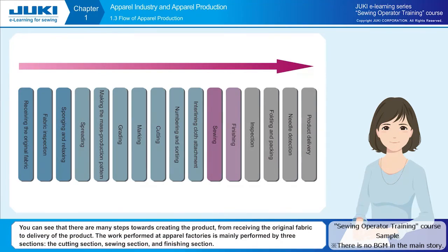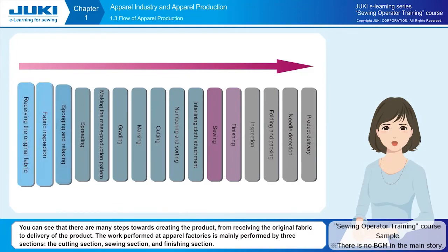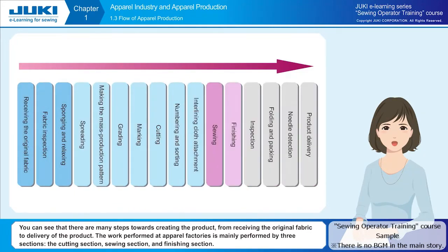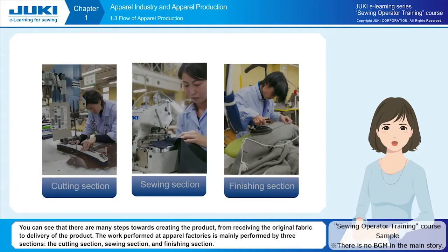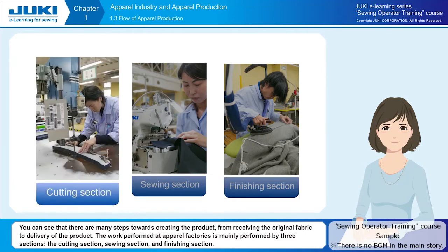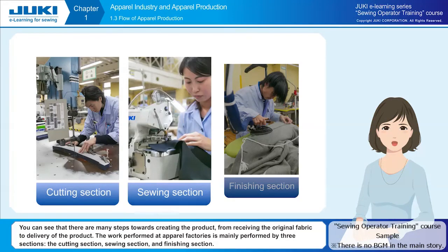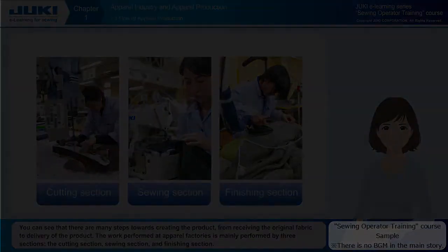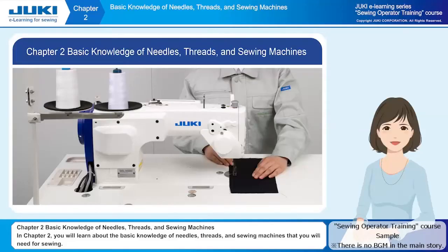You can see that there are many steps toward creating the product, from receiving the original fabric to delivery of the product. The work performed at apparel factories is mainly performed by three sections: the cutting section, sewing section, and finishing section.